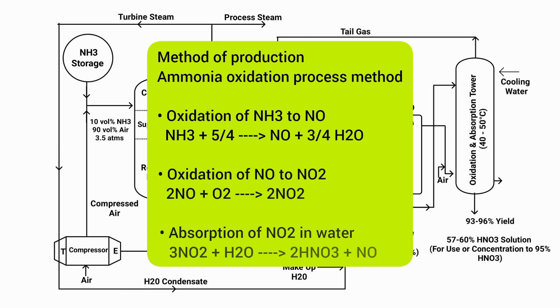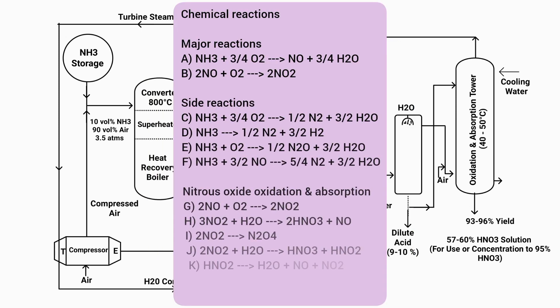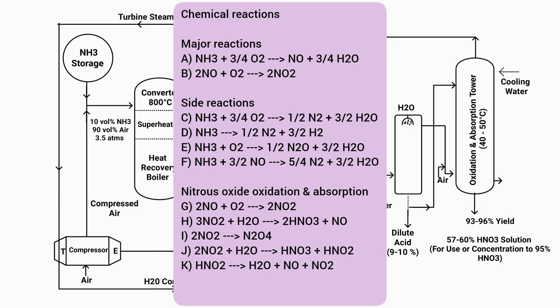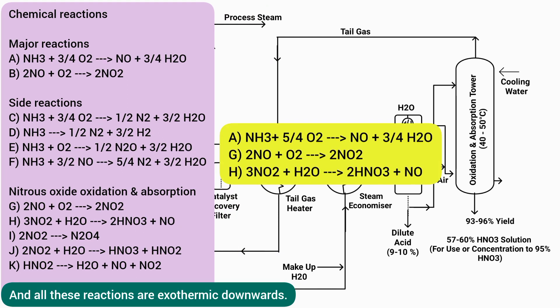Nitric acid is manufactured in industry by the ammonia oxidation process, which mainly consists of three steps. The first step is oxidation of ammonia to nitric oxide. The second step is oxidation of nitric oxide to nitrogen dioxide. The third step is absorption of nitrogen dioxide in water. All these reactions take place in the production of nitric acid, and the three main reactions are the most important ones to remember.